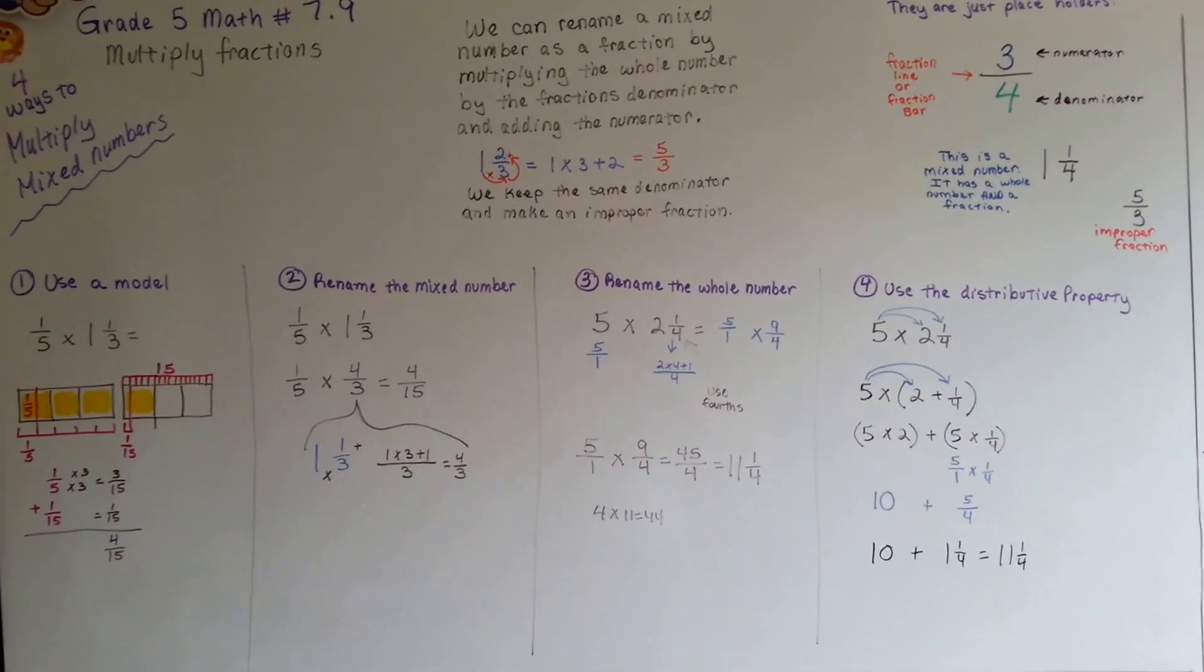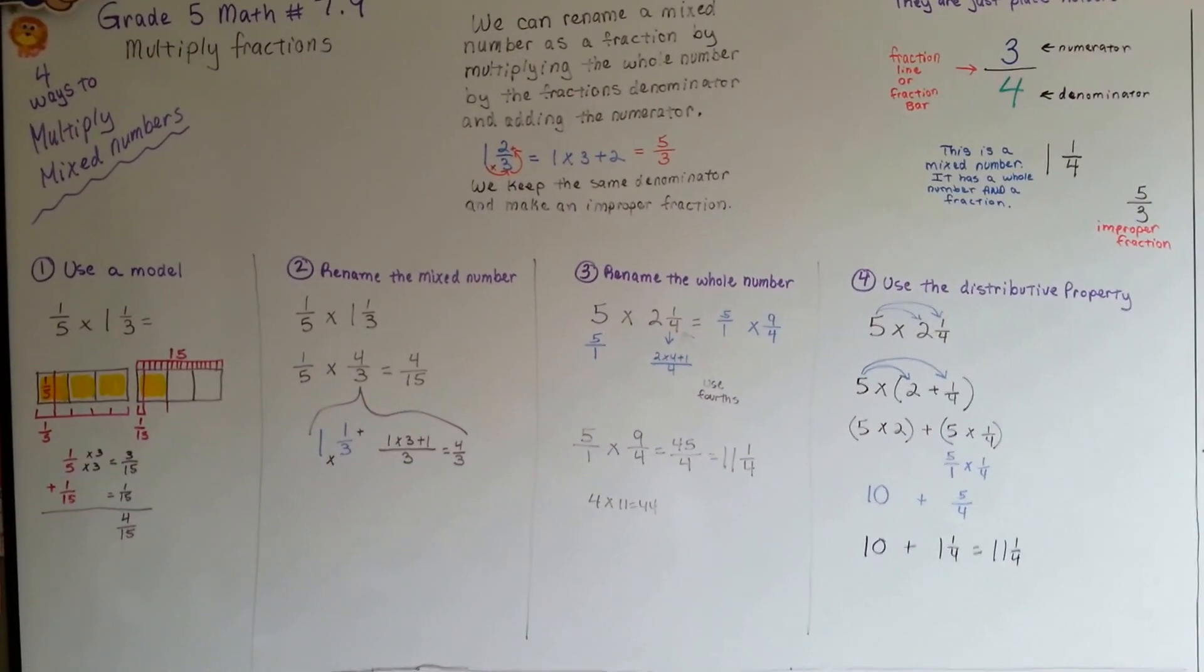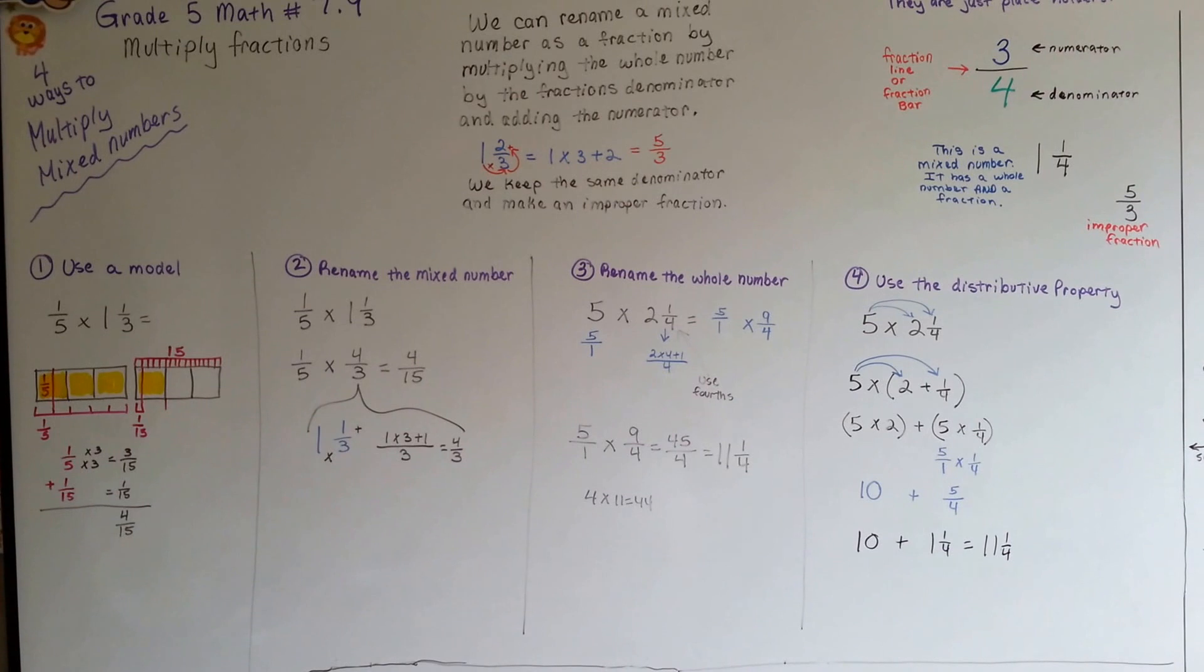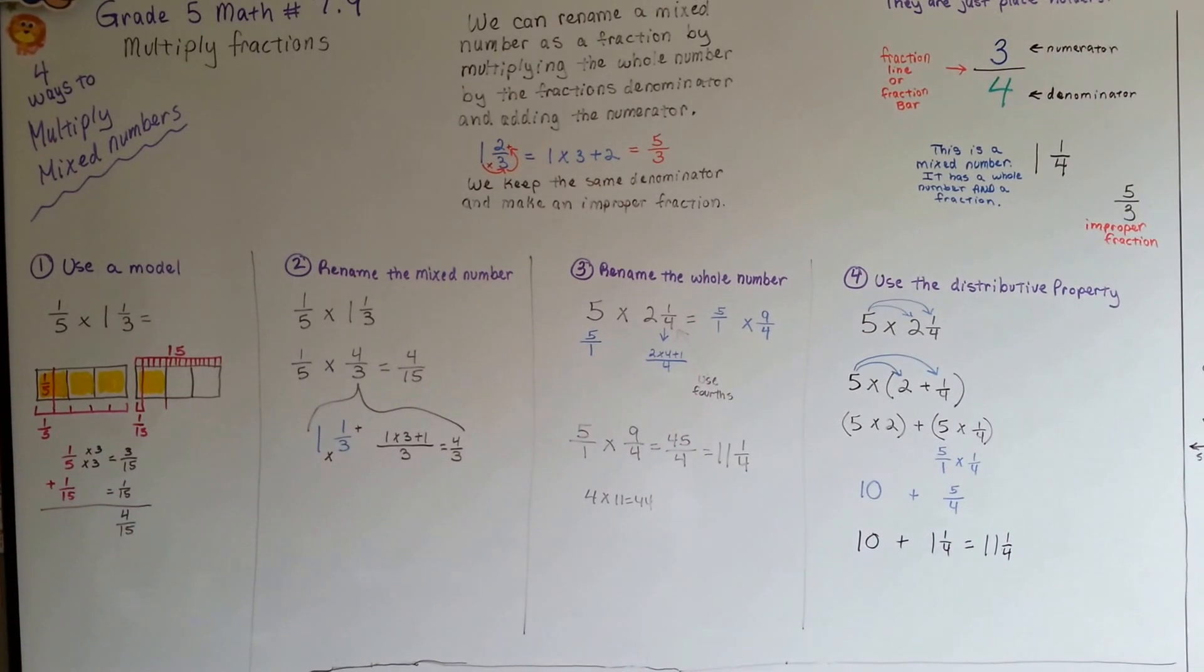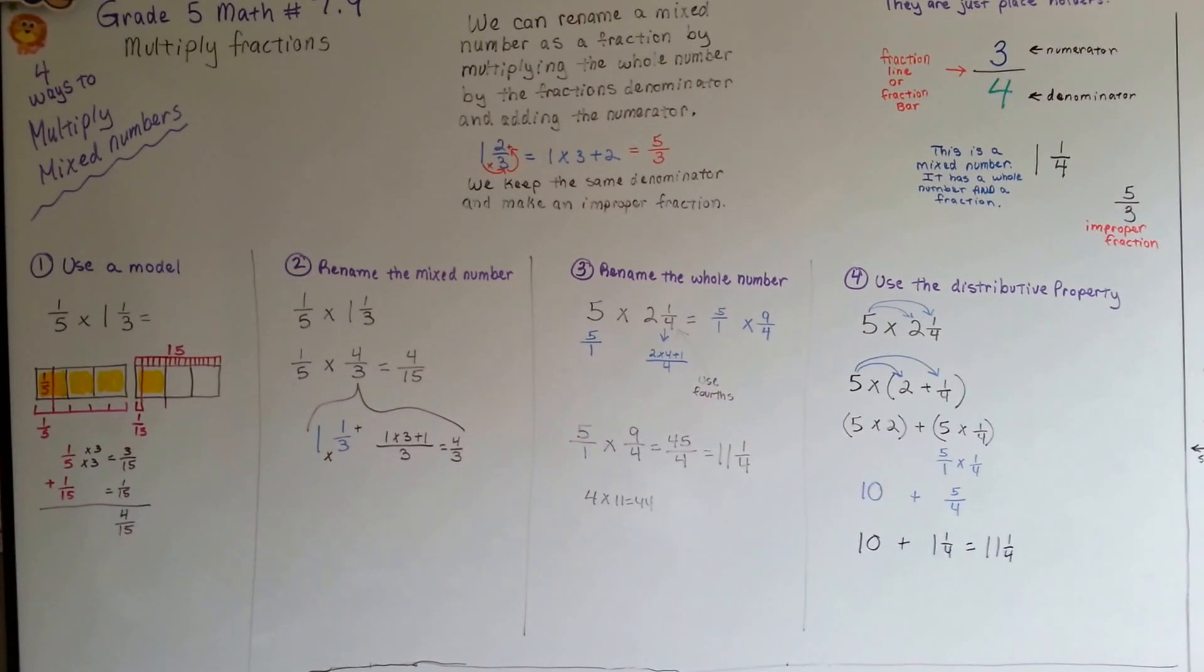Because you could get it marked wrong. So that's four different ways to multiply mixed numbers. You can use whichever one seems like the easiest for you. Whatever gets you the right answer. See you next video. Bye!